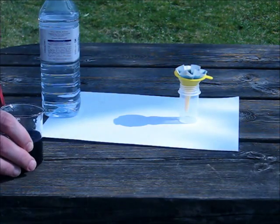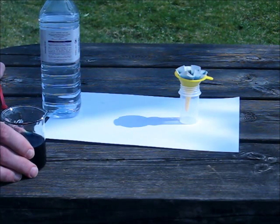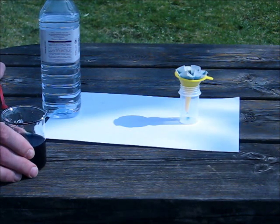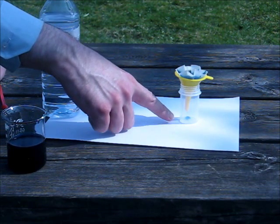Now, what will happen is, over the next several minutes, the Prussian blue, which is a solid, will be trapped on the filter paper. Some of the Prussian blue is soluble, and you can see down there that it has actually penetrated through the filter paper.